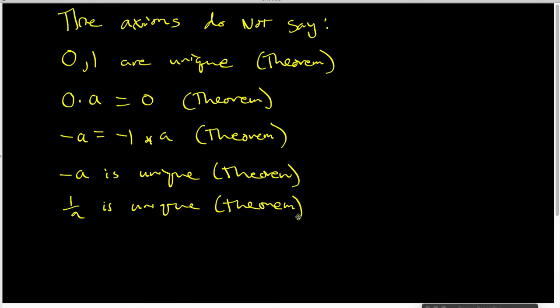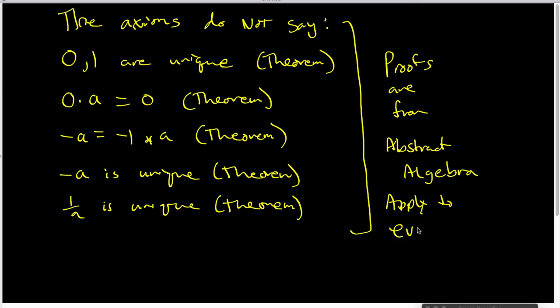Now, these theorems are technically things that would be proved in an abstract algebra class. So the proofs are from abstract algebra. And it's important to realize that the proofs of these facts apply to every field, not just the real numbers. And we're going to look at a few of the proofs of some of these things in class, but we're not going to prove all of them. I'm simply wanting you to be aware that there is something to prove.